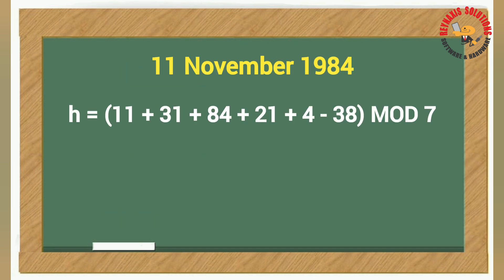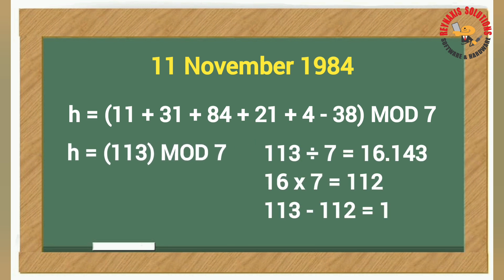After getting the totals for each group, sum this value shown in the chalkboard. That should be h equals 11 plus 31 plus 84 plus 21 plus 4 minus 38. The 38 is derived from 2 times 19. For the final computation, get the mod of 113 and 7.